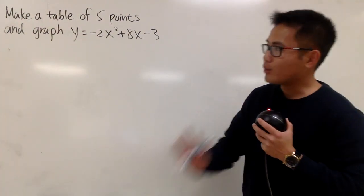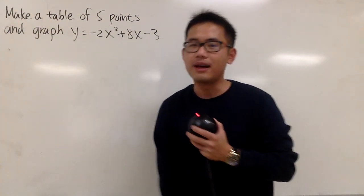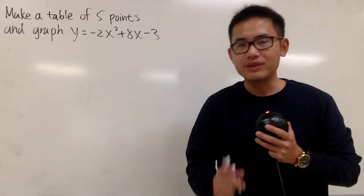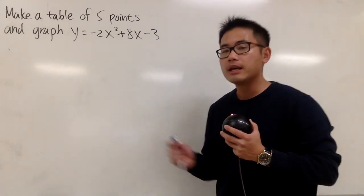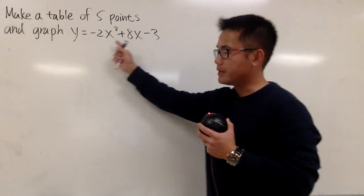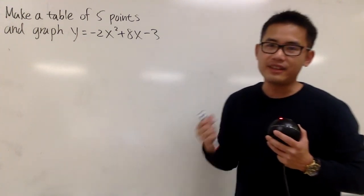Okay, we're going to make a table of five points and then graph this parabola. And remember, the most important point is the vertex of the parabola. To do so, we are going to use the vertex formula because we have this equation in the standard form.